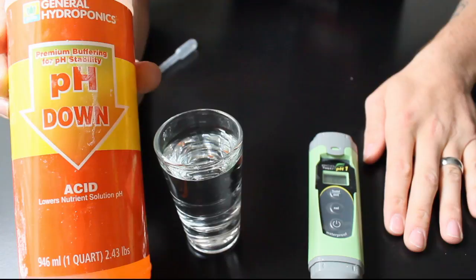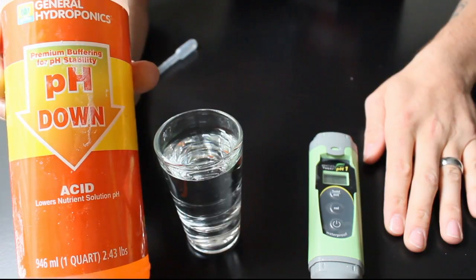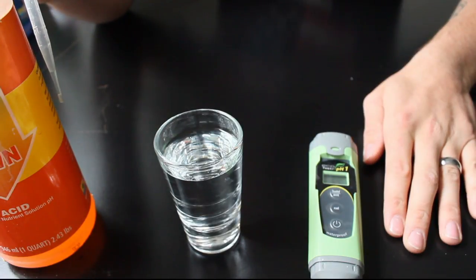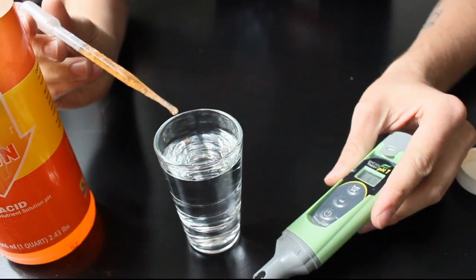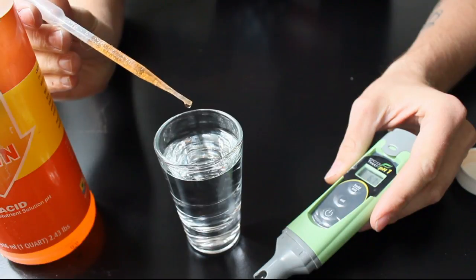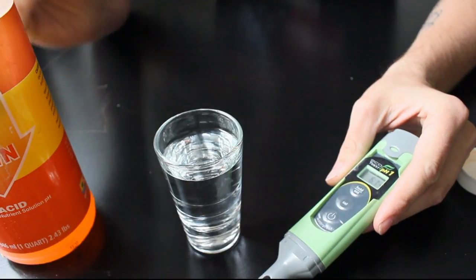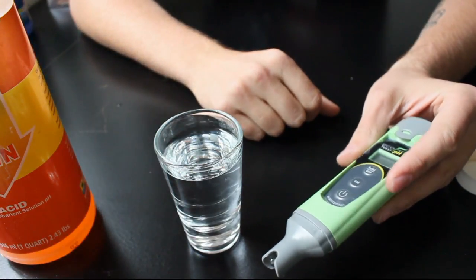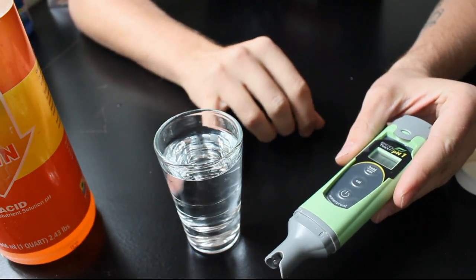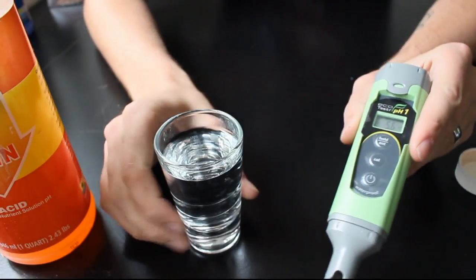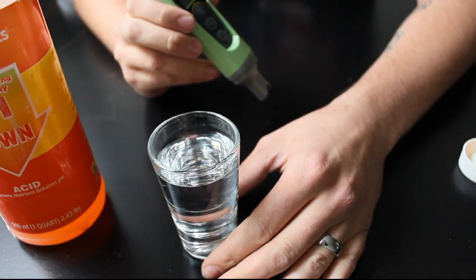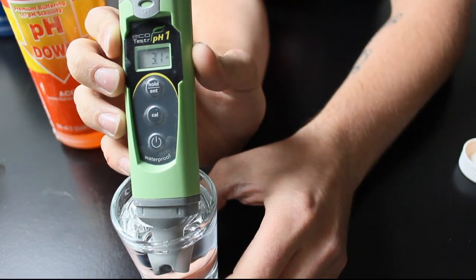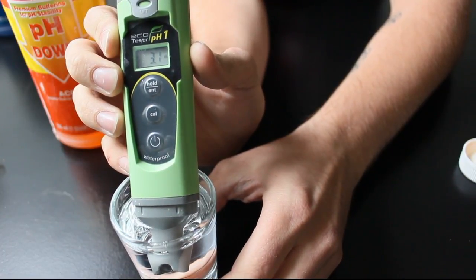We've got our pH down by General Hydroponics, and we will be using this. I recommend a small pipette. That way you can get the solution and put it in your water. So we're going to take our pipette and just give it a couple of drops. This is a very small amount of water, it won't take a lot of pH solution to really drastically change the pH of this water. So now let's take a look. We want to stir it around a little bit. Now that it's mixed up, let's check the pH. Now you'll notice how drastically that moved just with a couple of drops of this pH down.